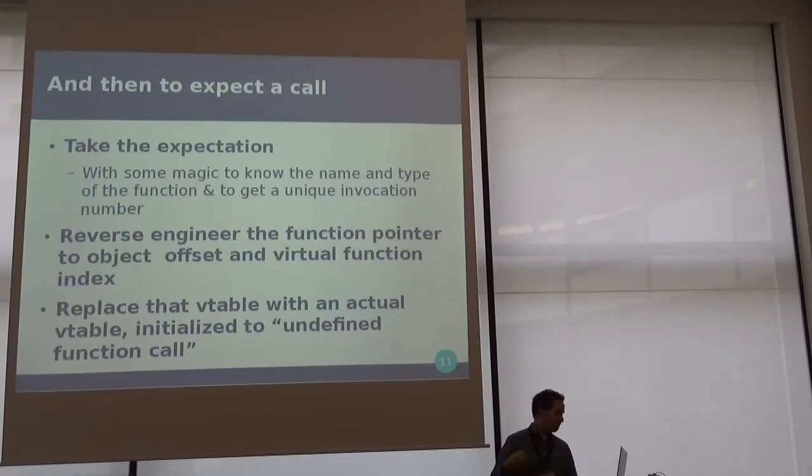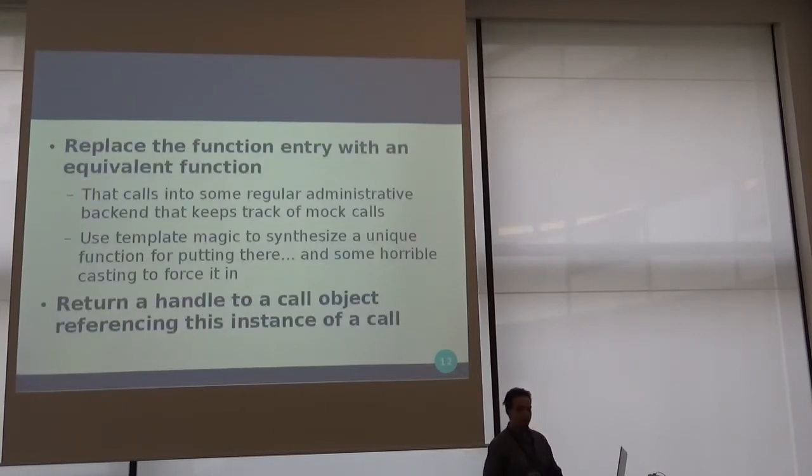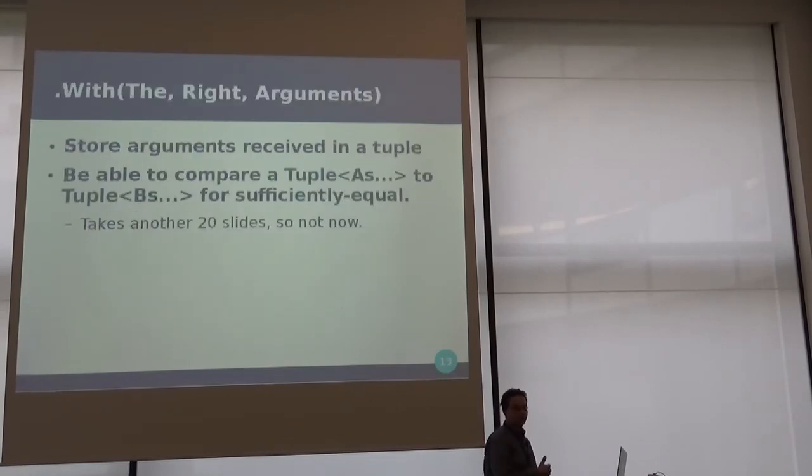And then we try to get a function that is compatible, so use a bit of template magic to create a new function, member function pointer of a different class. We reinterpret cast it to the right type, shove it in the right place, return a handle to the call object representing this, and then we need to tell it what to expect. So we pass in a tuple with all the arguments we want, we store the tuple, we have the tuple for the call that's actually coming in, we compare them somehow, it takes a few slides to do that, so I'm not explaining that now, and we can tell you what's fine.